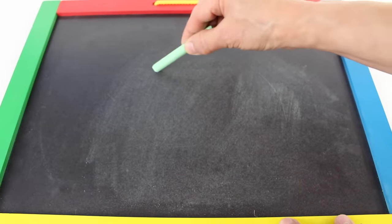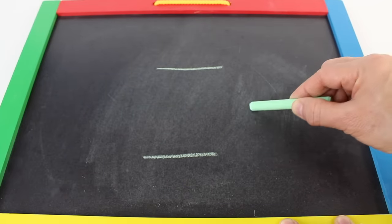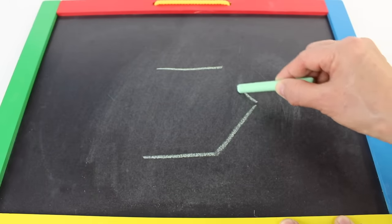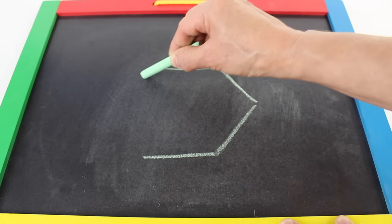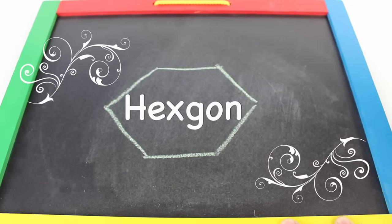Now let's draw a hexagon. It has six sides. One. Two. Three. Four. Five. Six. That's a hexagon.